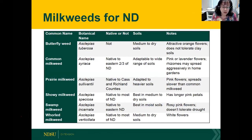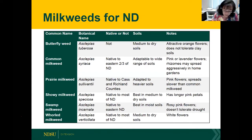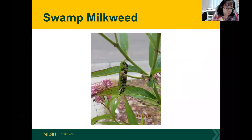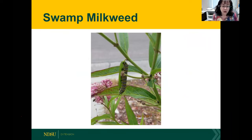A word on whorled milkweed — we are growing it here in Fargo and finding it spreads quite vigorously, so be careful. I put one swamp milkweed plant out by my mailbox, and within a year, the monarchs found it, laid eggs, and were producing caterpillars. It's truly one of those plants that if you plant it, they will come.